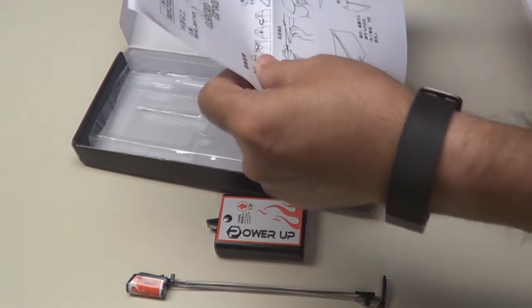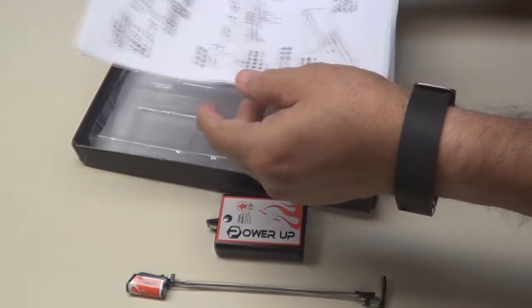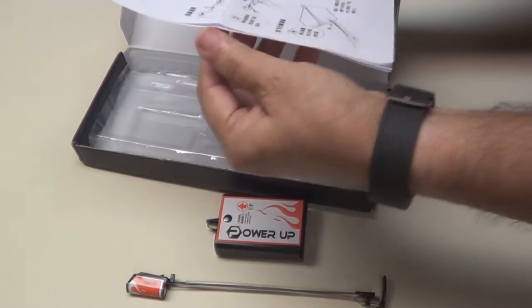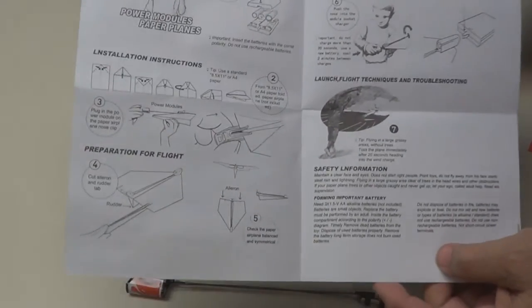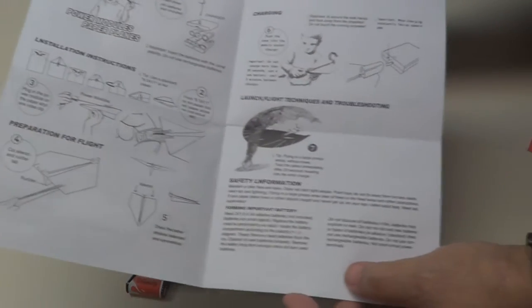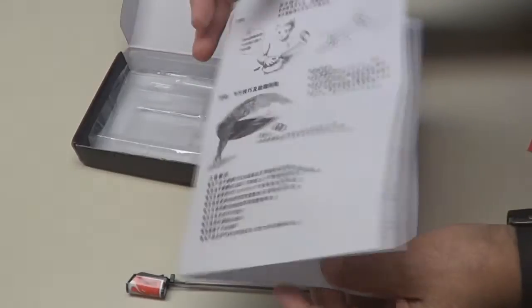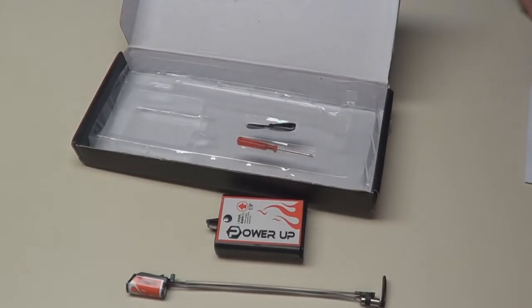Here's your instruction sheet. It's in Chinese. Let me open it up and make sure it's got some English. I can't read Chinese. There it is, English. Oh look, it shows you how to fold an airplane, how to clip the propeller on. We'll see what we can do here.